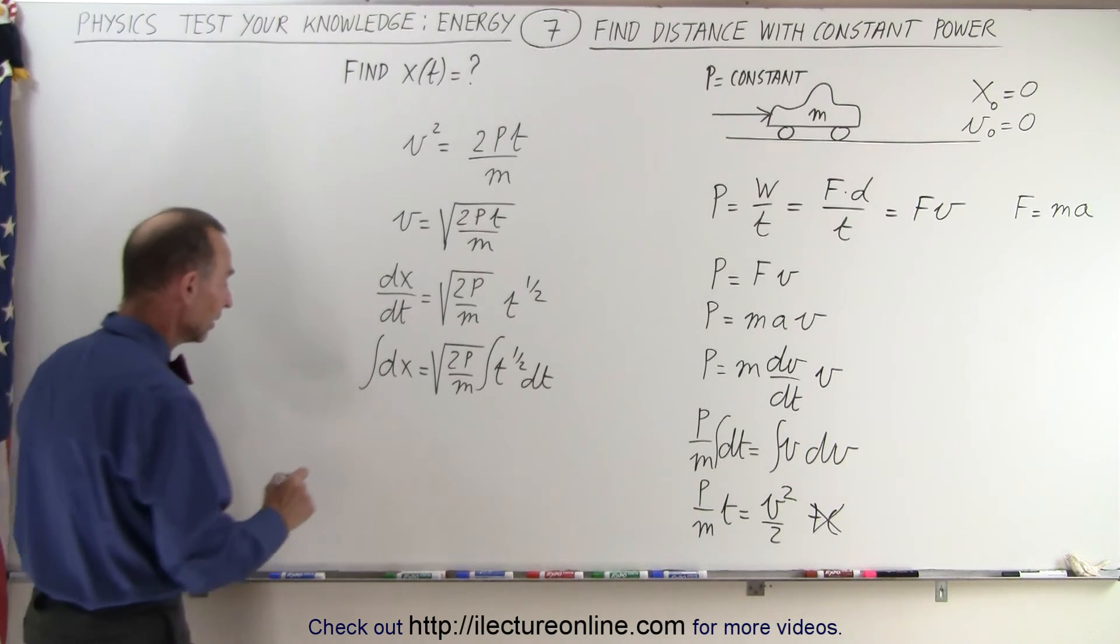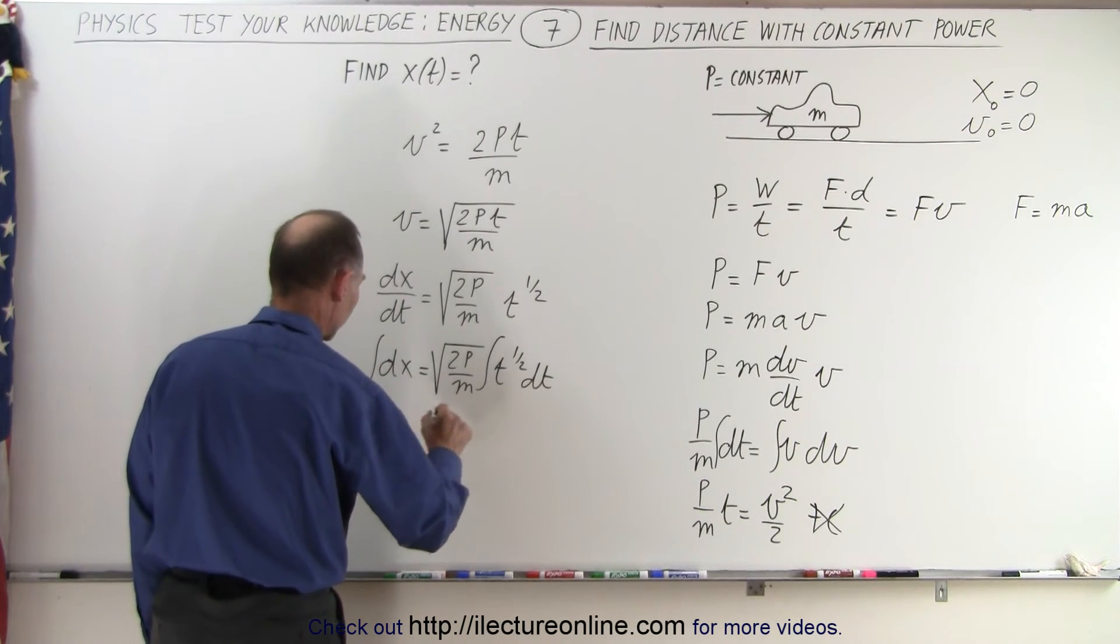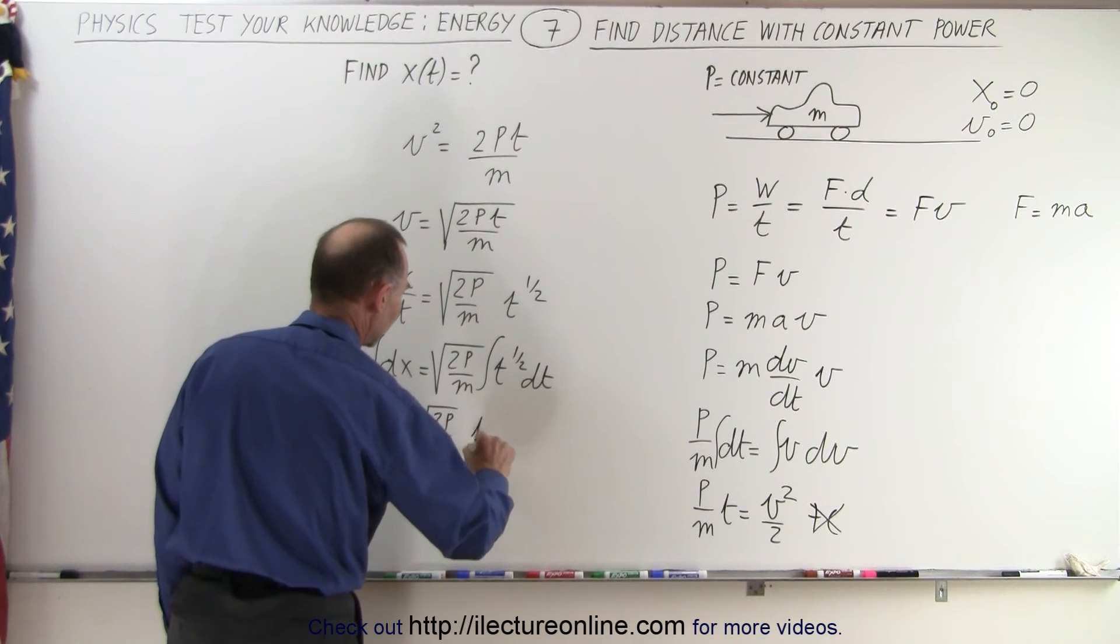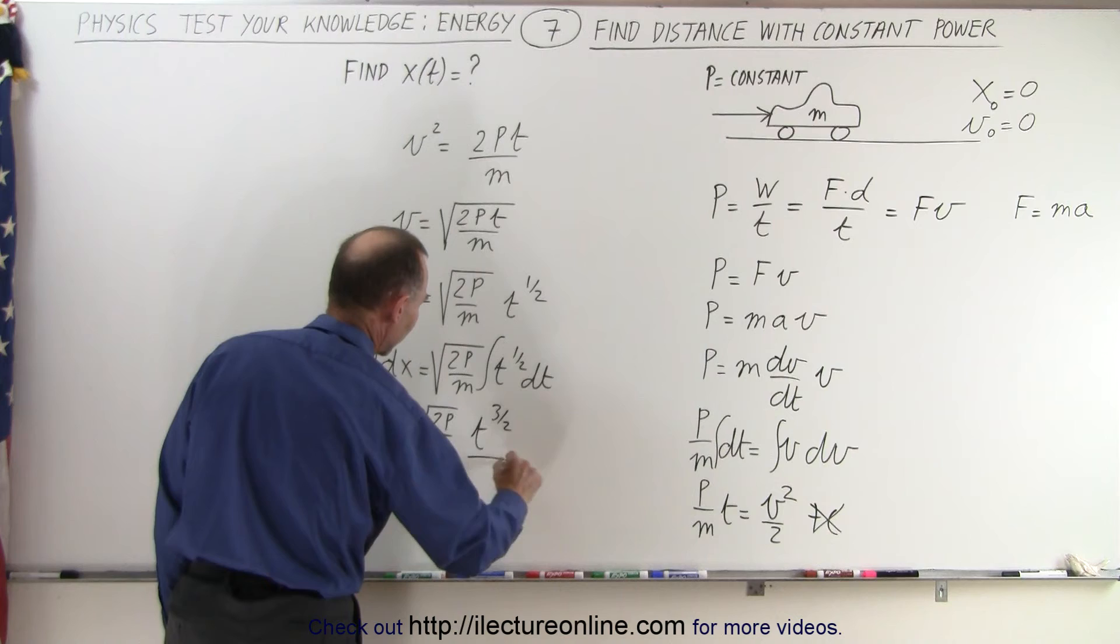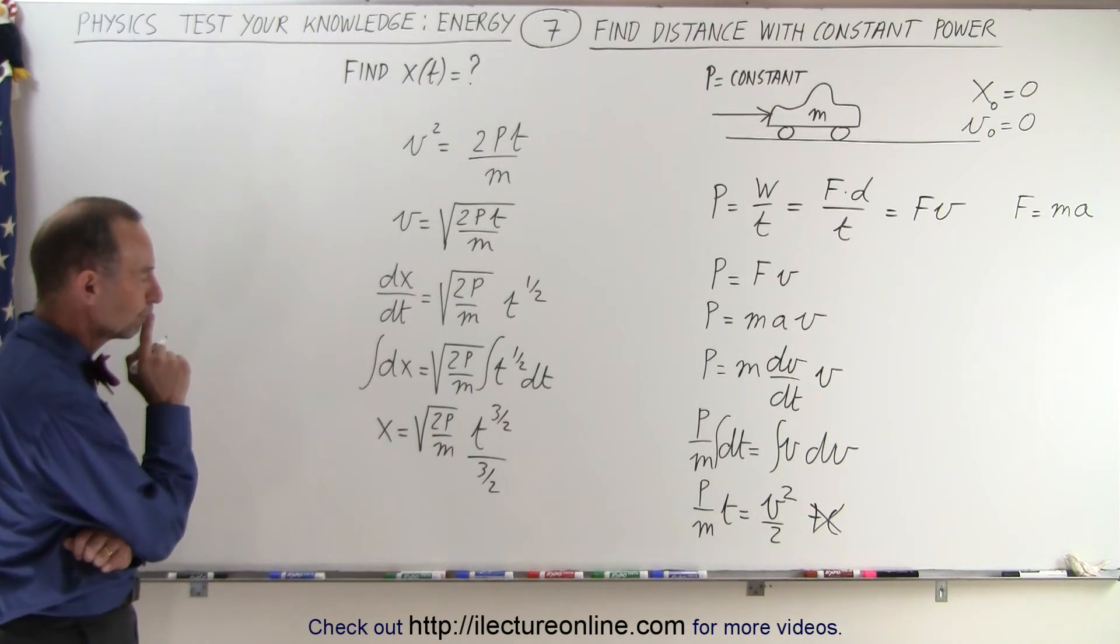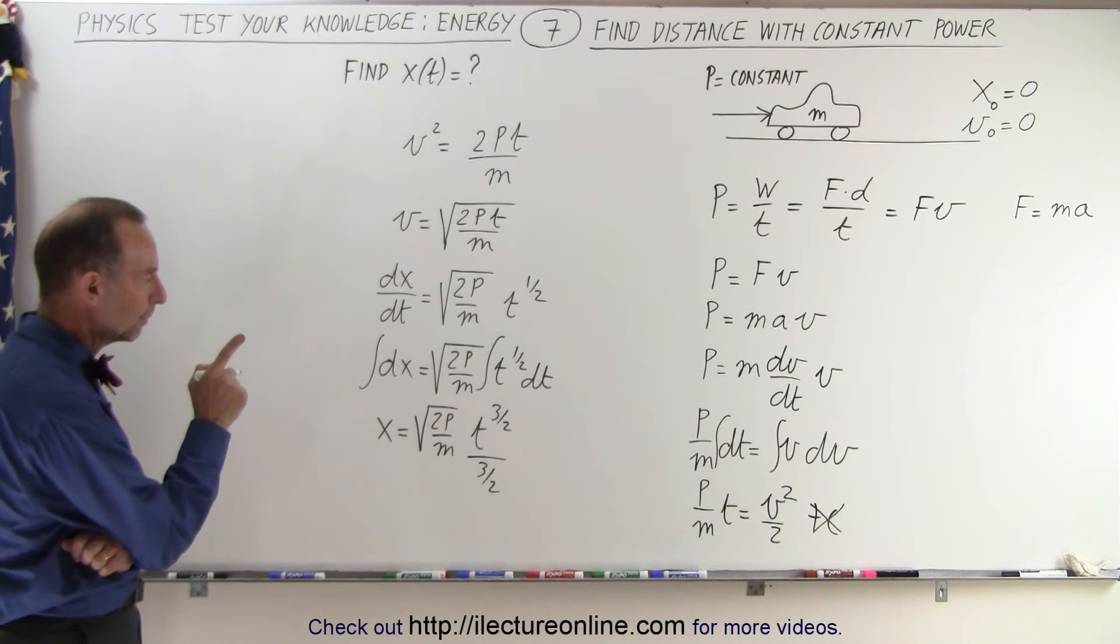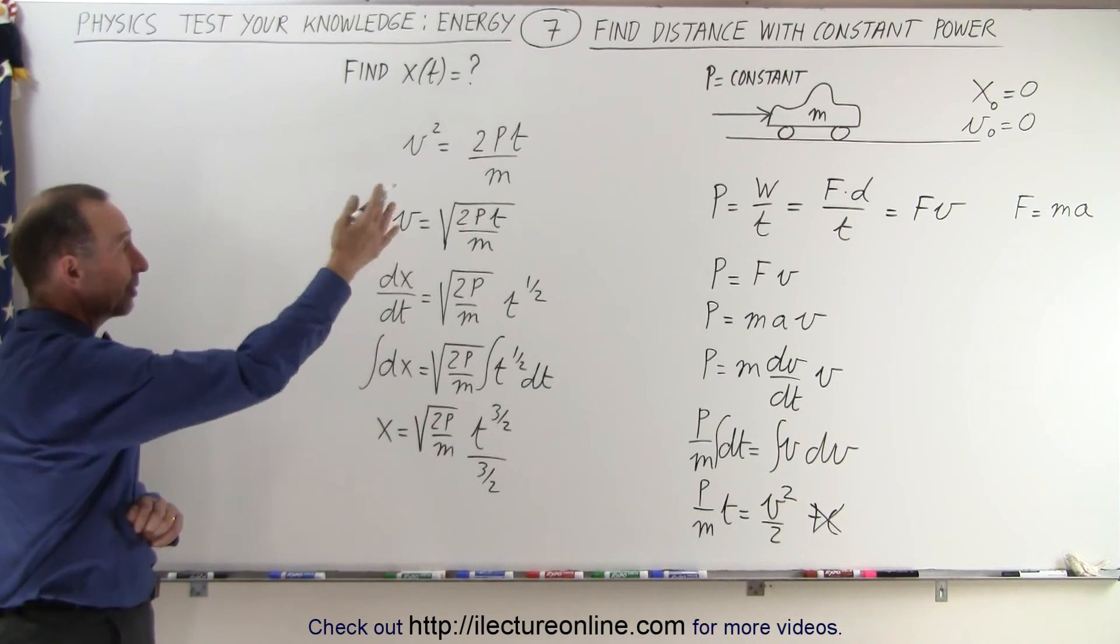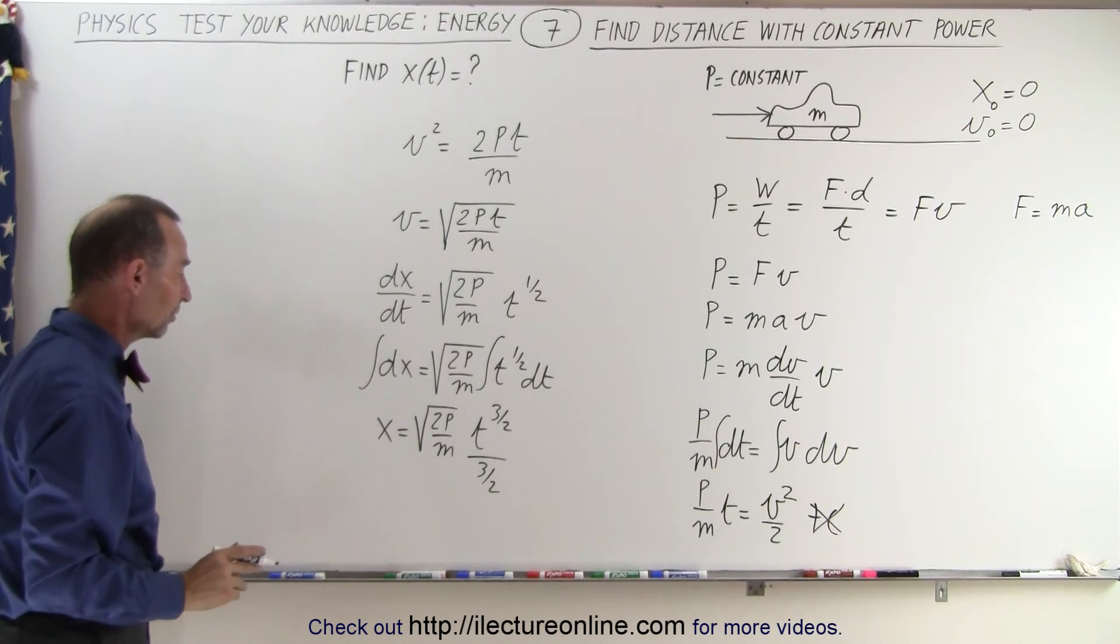So on the left side, we have x equals, on the right side, we have the square root of 2P/m times t to the three-halves power divided by 3/2. Well, plus the constant of integration, but again, x will be 0 when t equals 0, so we don't have to worry about the constant of integration.